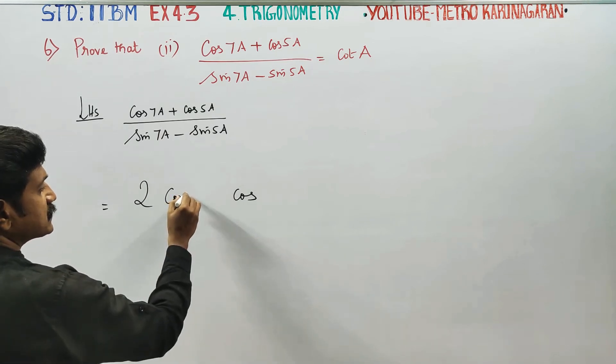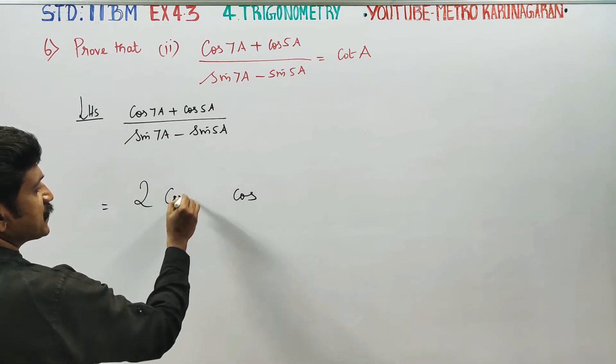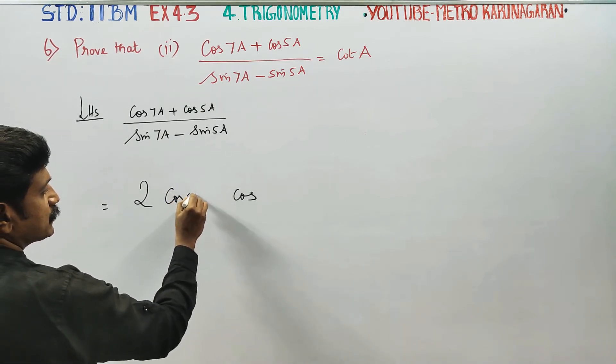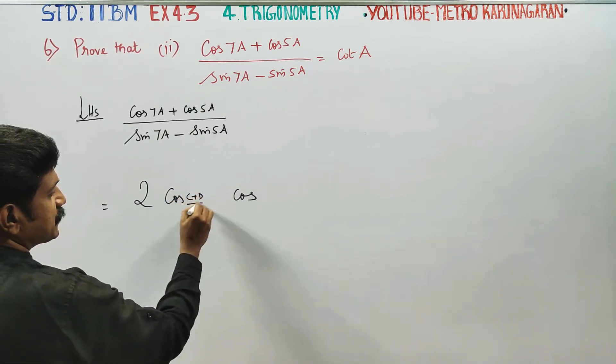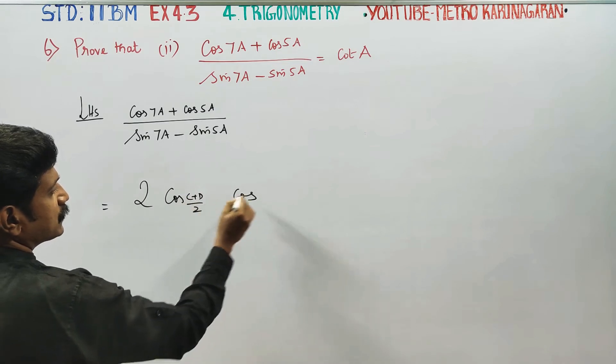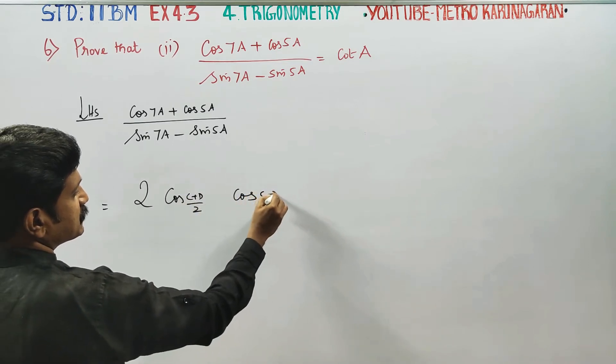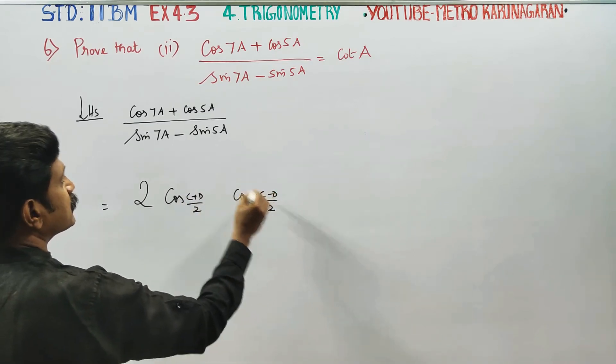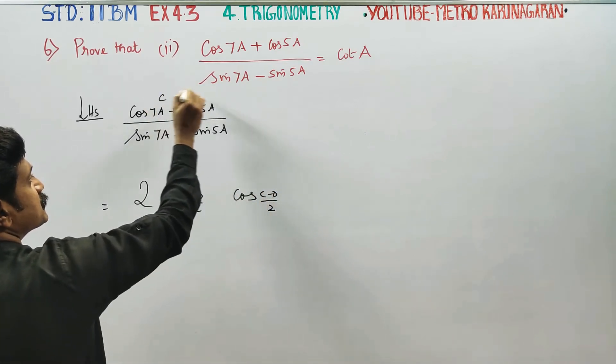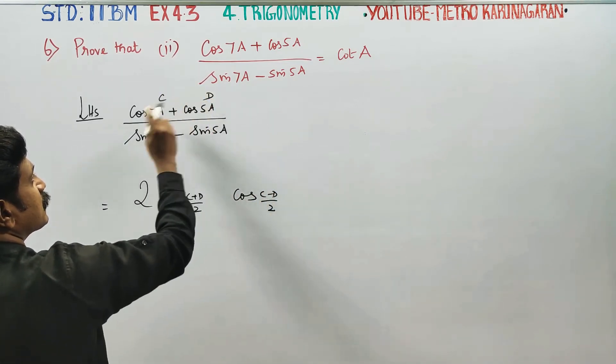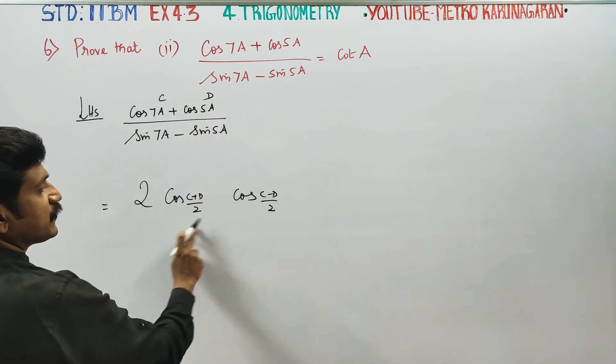The formula is C plus D by 2, C minus D by 2. If you see C and D: cos C plus D — the formula is here.